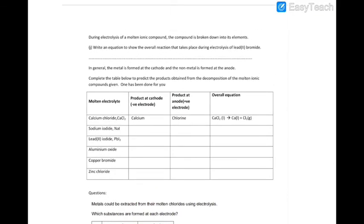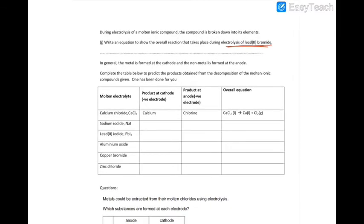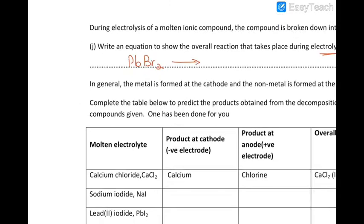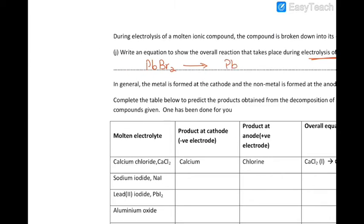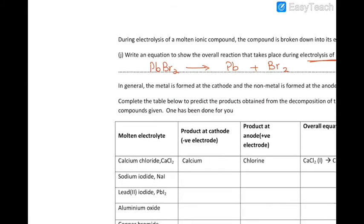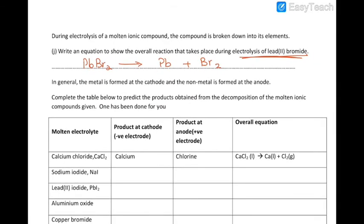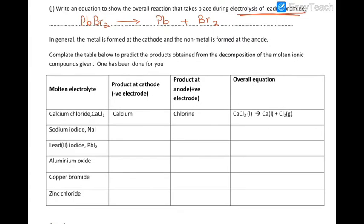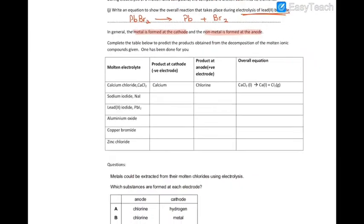Looking at the overall reaction for the electrolysis of lead bromide: lead bromide splits to give you lead and bromine. In general, the metal forms at the cathode and the non-metal forms at the anode.